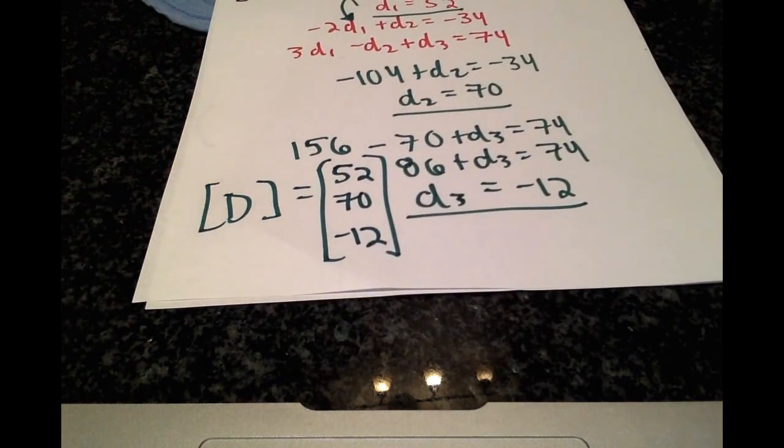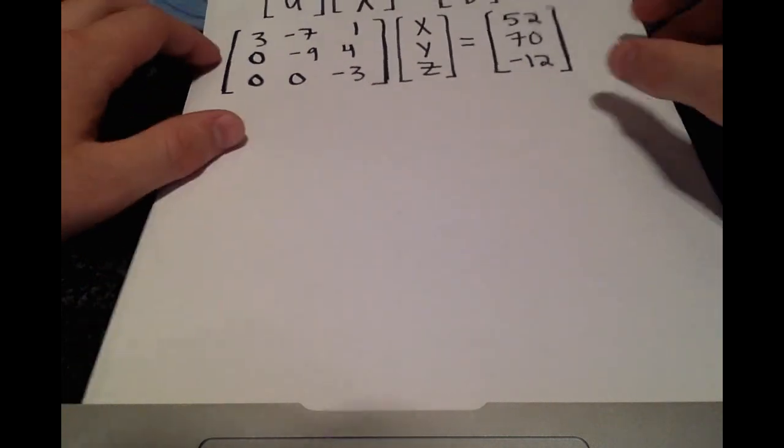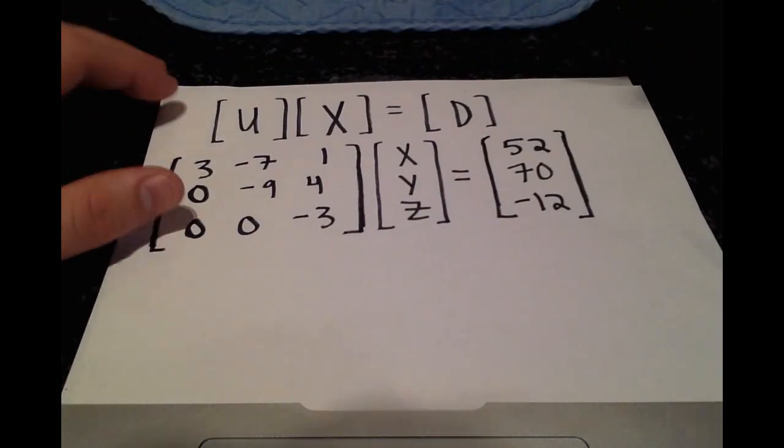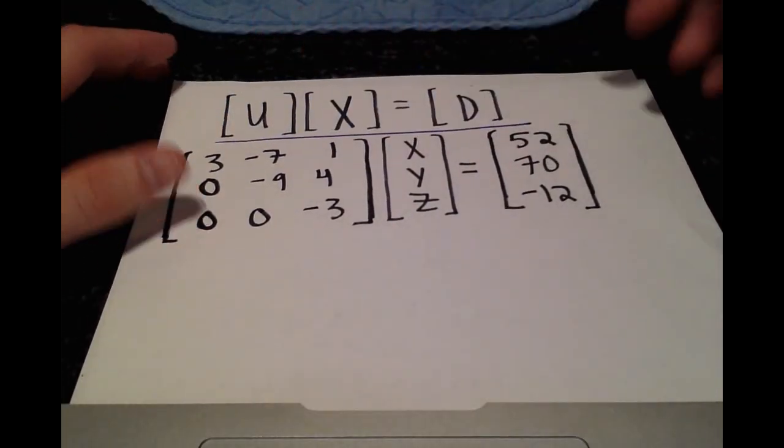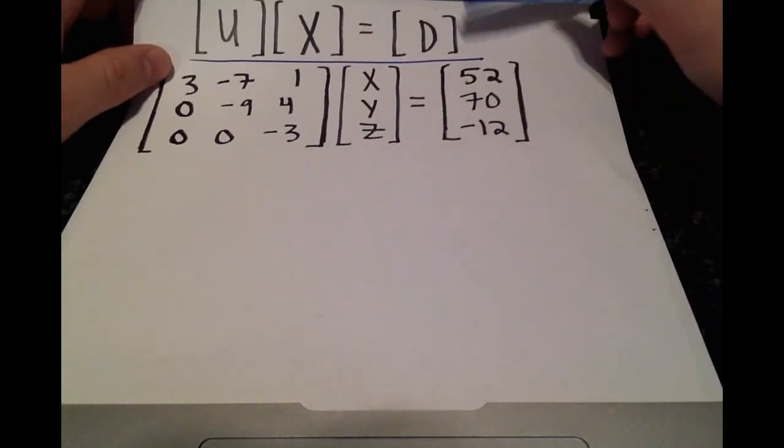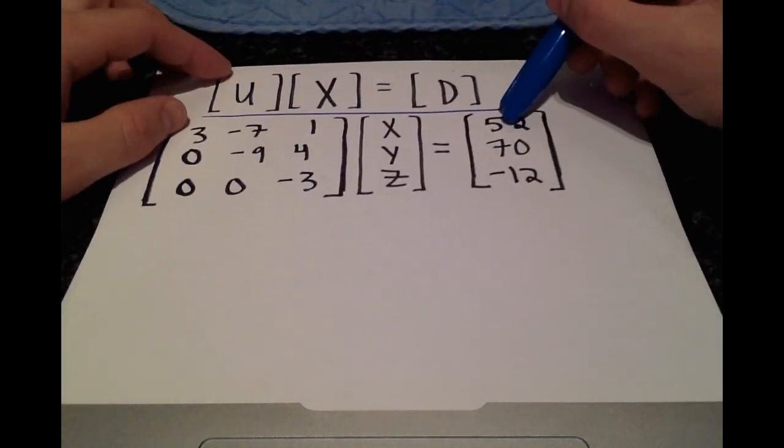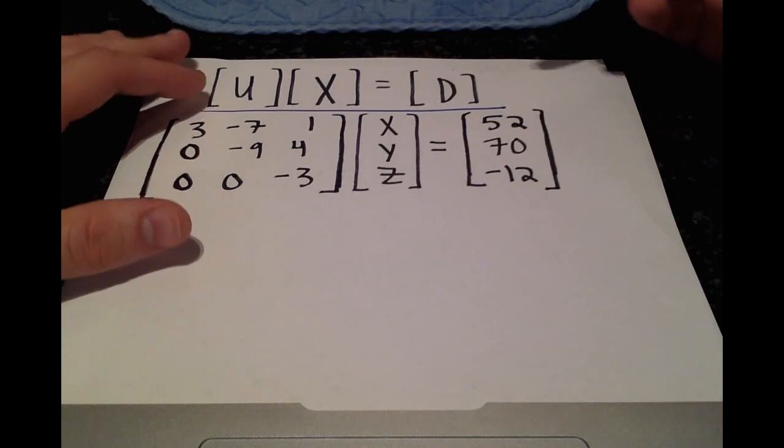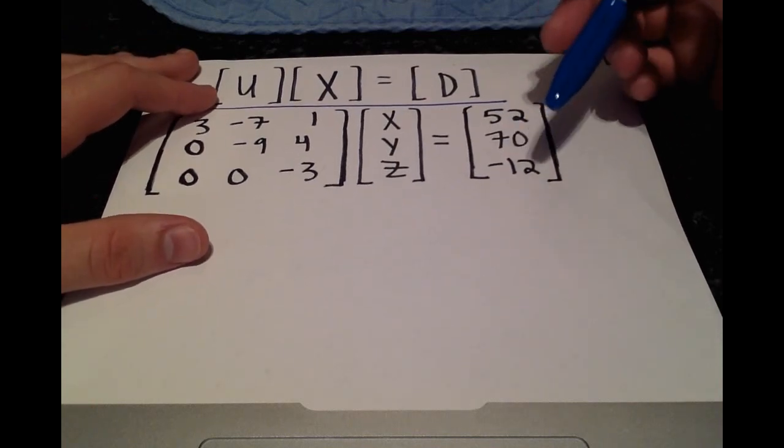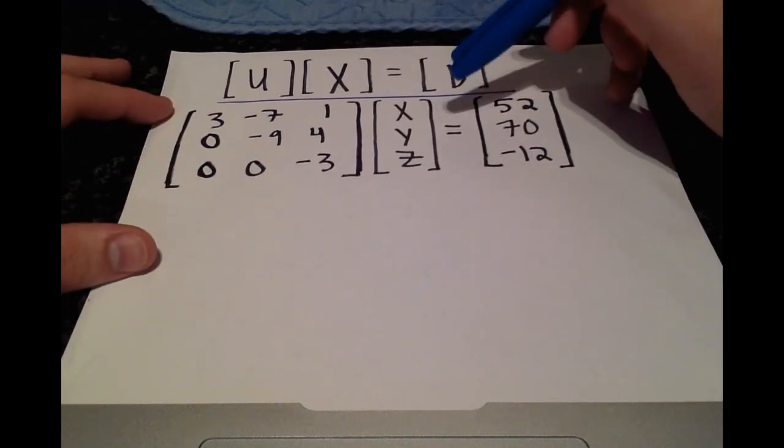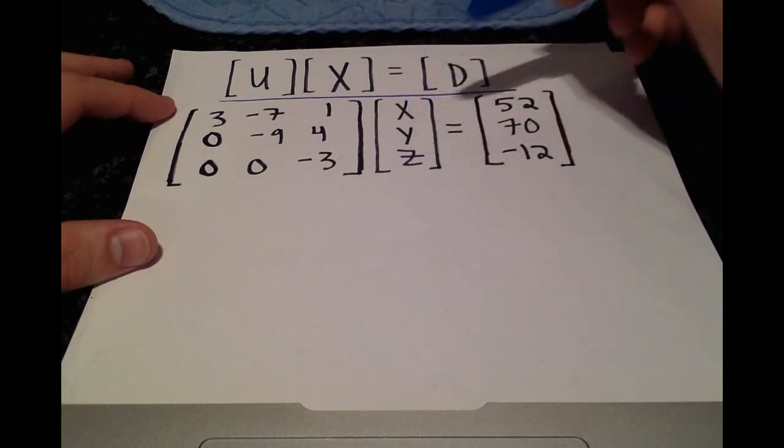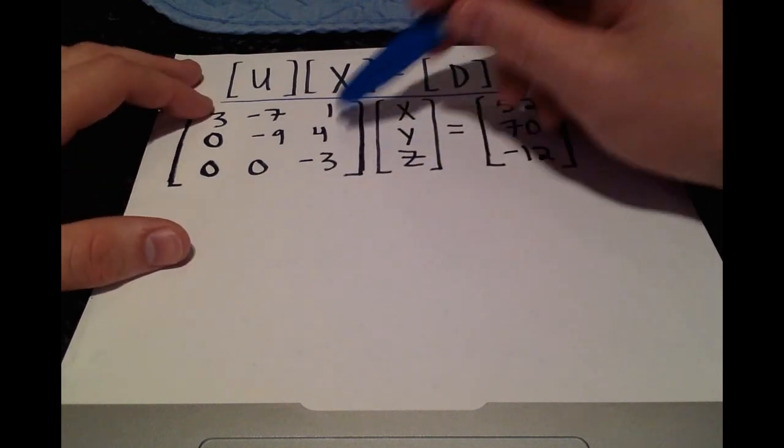And now we'll move on to our final step where we calculate the x vector with the relationship Ux equals d. And we'll fill in the d vector for what we just solved for, the 52, 70, and negative 12. And we'll find each of our x, y, and z values in the same exact way by multiplying it out.